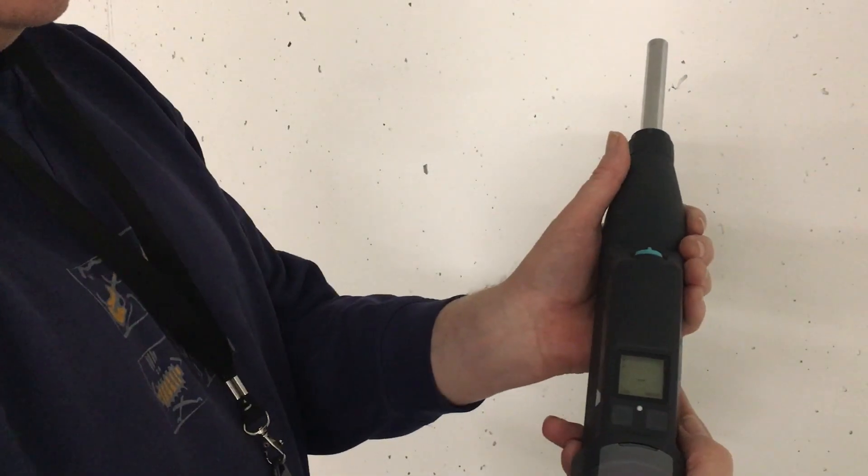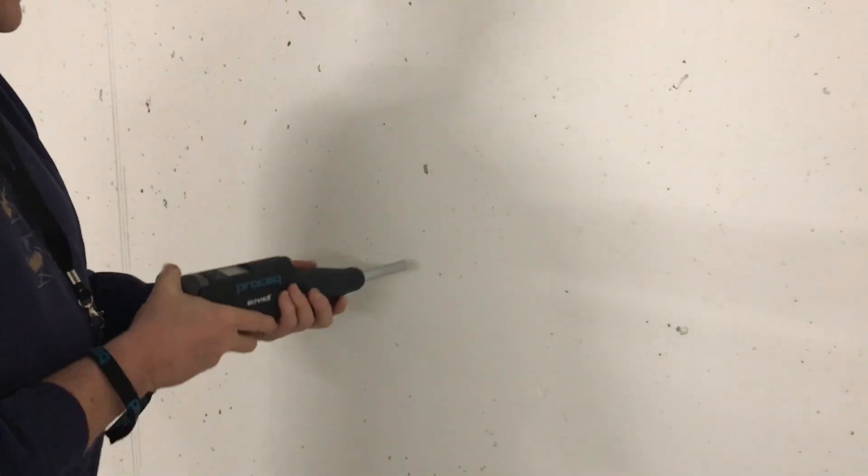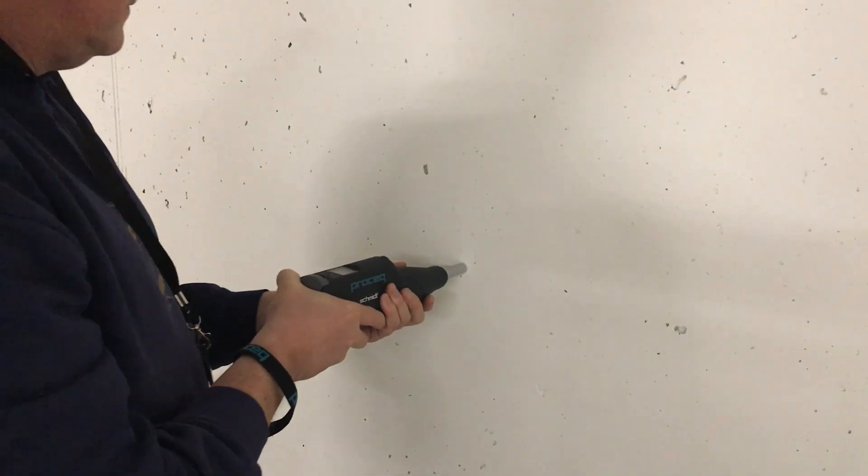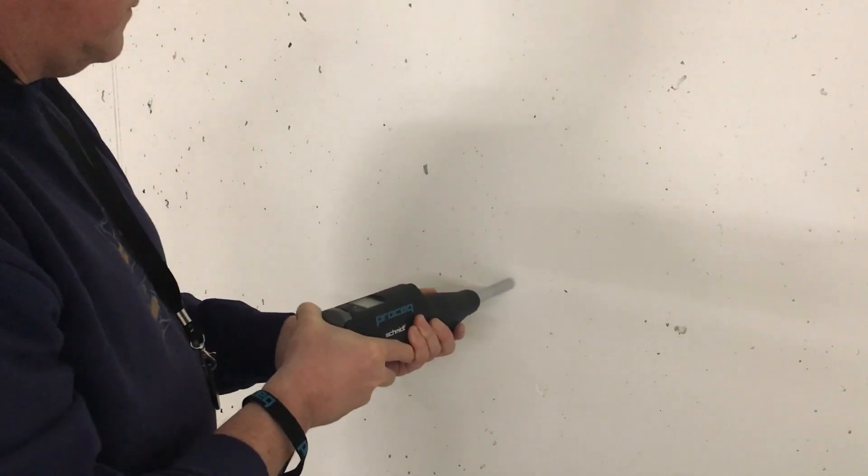Now let's look at the original Schmidt live print. As you can see, it's a very compact hammer without the bulky paper roll apparatus. This allows us to perform the impact series in a comfortable manner.